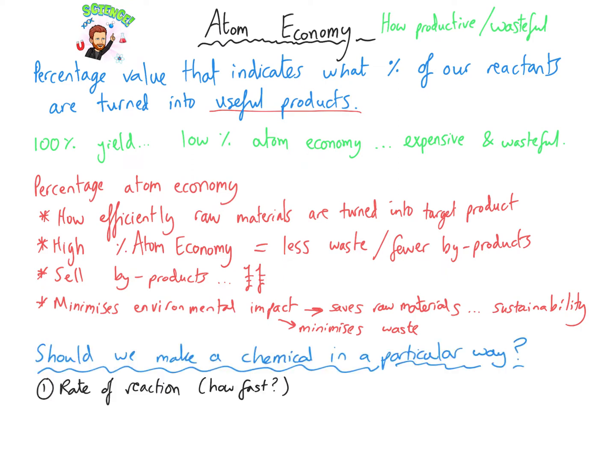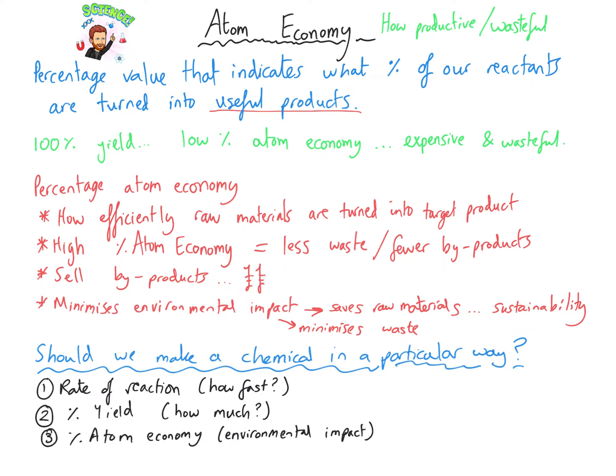We've got rate of reaction — so how fast we get our product — yield, so how much of our product we actually make, environmental impact or waste, which is the atom economy percentage, and of course overall cost, which we can't escape from. The company will definitely be interested in that. All of this feeds into the considerations of the company: cost and environmental impact, and how much product they actually can make and sell.